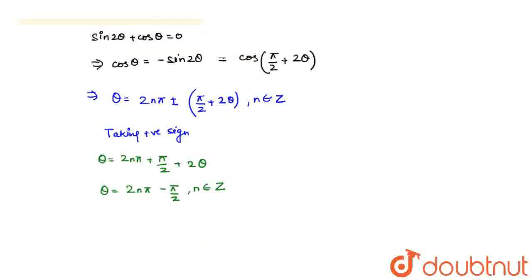So if I take the negative sign, I get theta is equal to 2n pi minus pi by 2 plus 2 theta. Correct?